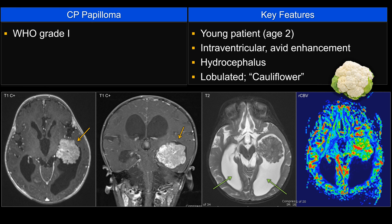The things they can ask you about papilloma: first of all, it's grade 1, so it's a low-grade lesion. They usually come with hydrocephalus — usually due to overproduction, but depending on the location, they can also cause obstruction. They can also have CSF dissemination, and that can also cause obstruction.